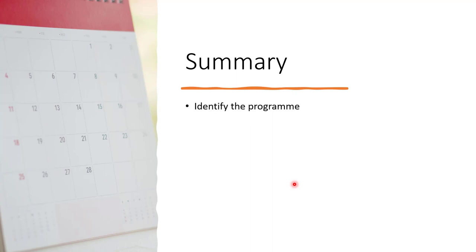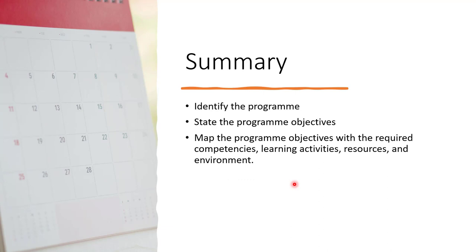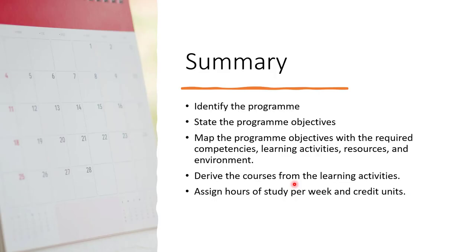Let's summarize. We have been able to: identify the program, state the program objective, map the program objective with the required competencies, learning activities, resources, and environment, then derive the courses from the learning activities. Having done that, assign hours of study per week and credit units. Finally, categorize the courses into the different levels — for a four-year program, determine which courses come up at 100, 200, 300, and 400 level. Thank you for listening. Try and practice what you have heard.